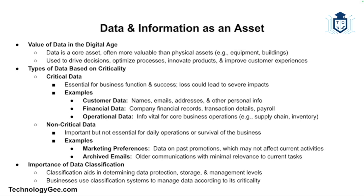Operational data is data necessary for running the core operations of a business, such as supply chain information or inventory levels. Non-critical data, while useful, is not essential to daily operations or the company's survival. Loss or corruption of this data might cause inconvenience but won't necessarily halt business operations. Examples include marketing preferences — historical data about promotional campaigns — and archived emails, older communication no longer relevant to current business activities.